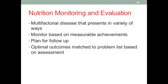For nutritional monitoring and evaluation, this is a multifactorial disease that presents in a variety of ways. We need to monitor measurable achievements: CD4 cell count, body weight increase, loss, or maintenance depending on the situation, lean body mass in terms of body composition, and glycemic control. This is a lifetime condition, so we must plan. Based on current status, we need to plan for the next follow-up — considering what complications may arise between visits and identifying what to check on during the next visit to determine whether those problems are being solved or improved upon.